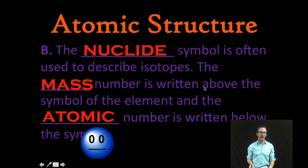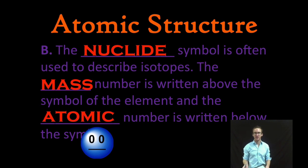Now we also have what's called the nuclide symbol to describe isotopes. This is a shorthand method that puts the mass number above the symbol of the element and the atomic number written beneath that symbol.